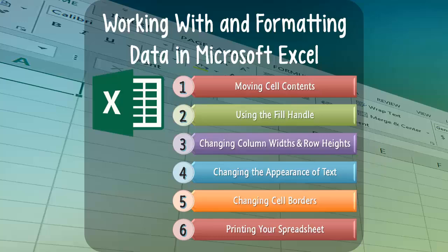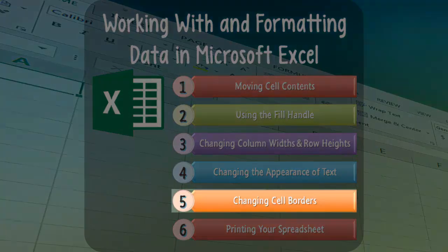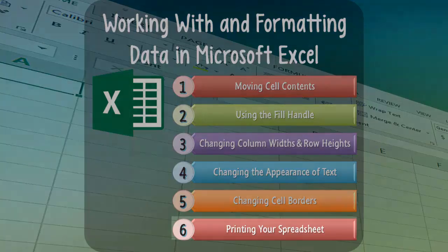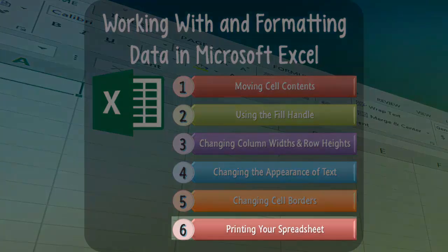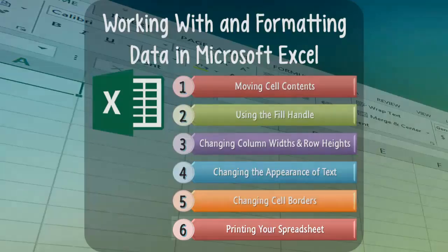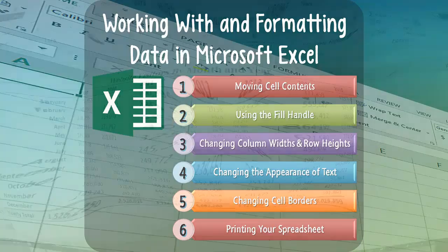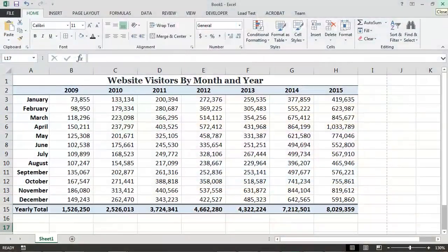After that, we'll learn how to change the appearance of the borders around a cell, and we'll conclude the video by learning how to print a spreadsheet or a portion thereof. In order to facilitate our exploration of these six topics, we will be creating a simple report in Excel which shows the number of people who have visited a particular website each month from 2009 through 2015.